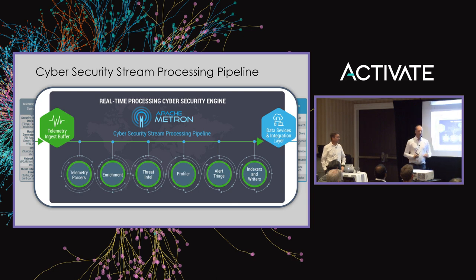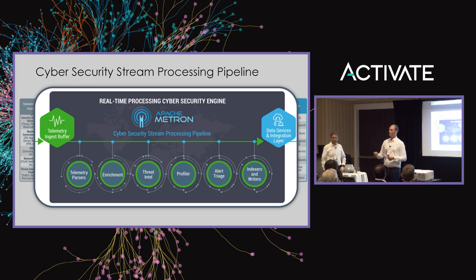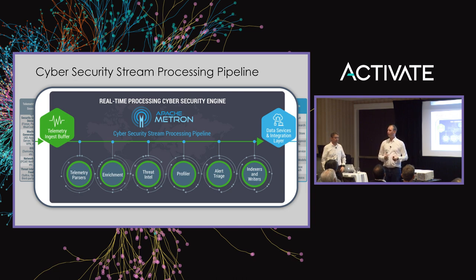The second enrichment step is threat intelligence — another form of enrichment where we compare information with known threat intelligence feeds. There are many feeds where you can ask: is this IP address known to serve malware? Does it spread WannaCry? If yes, that's another signal we can use for better estimating whether this event is really a problem.